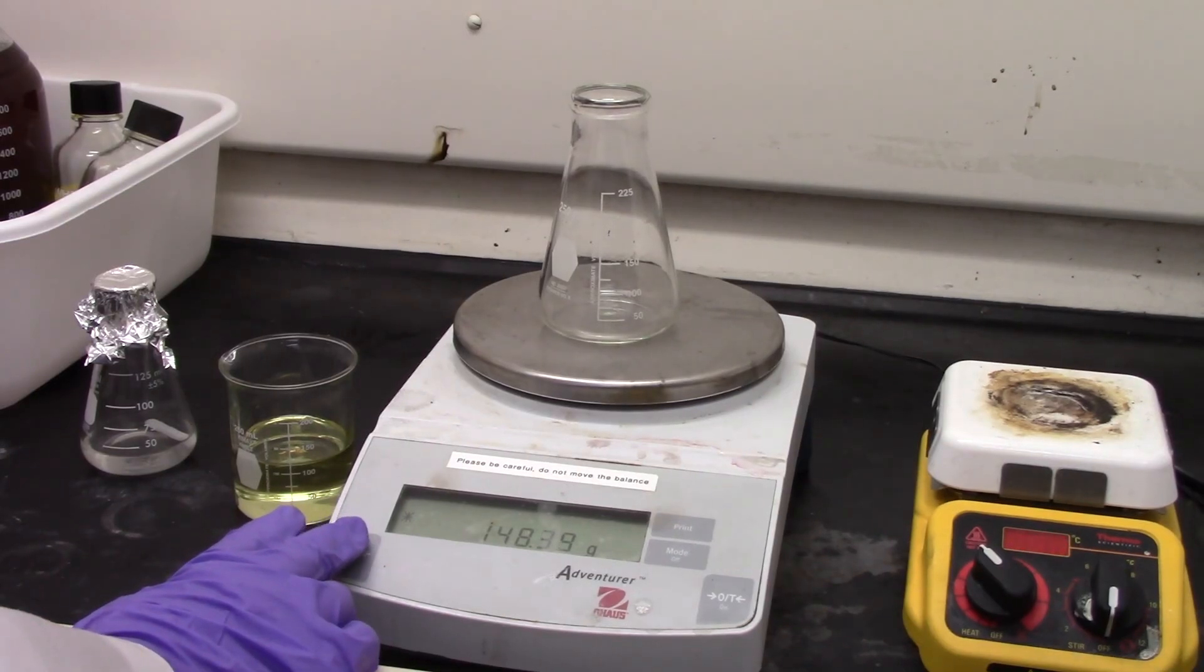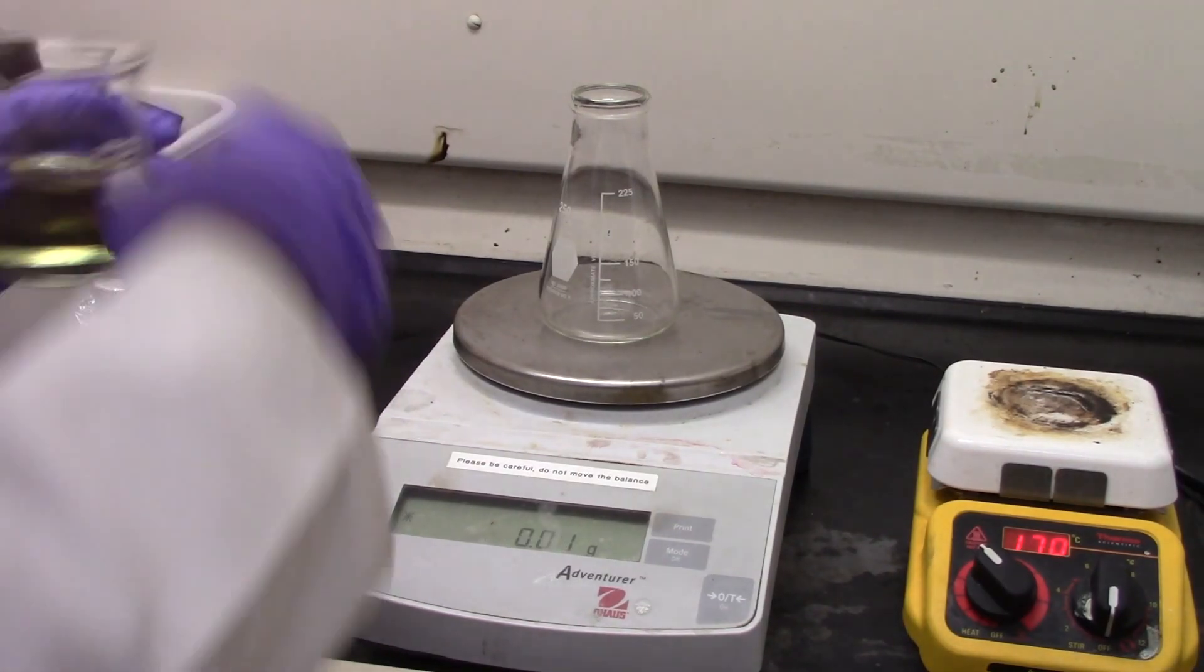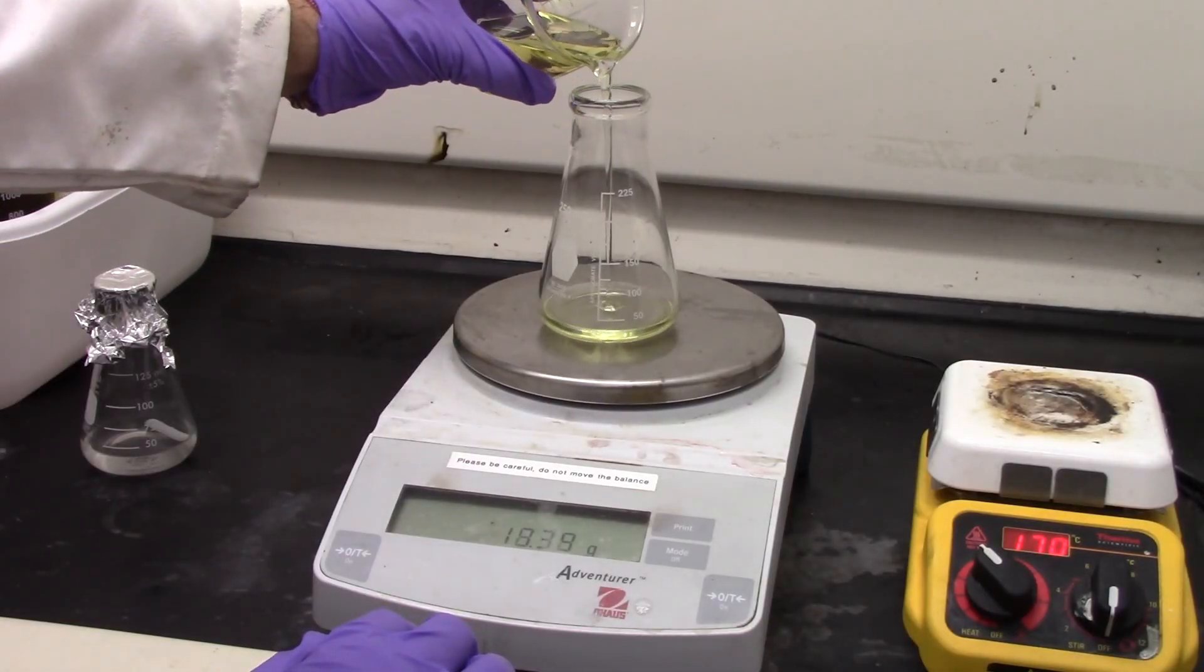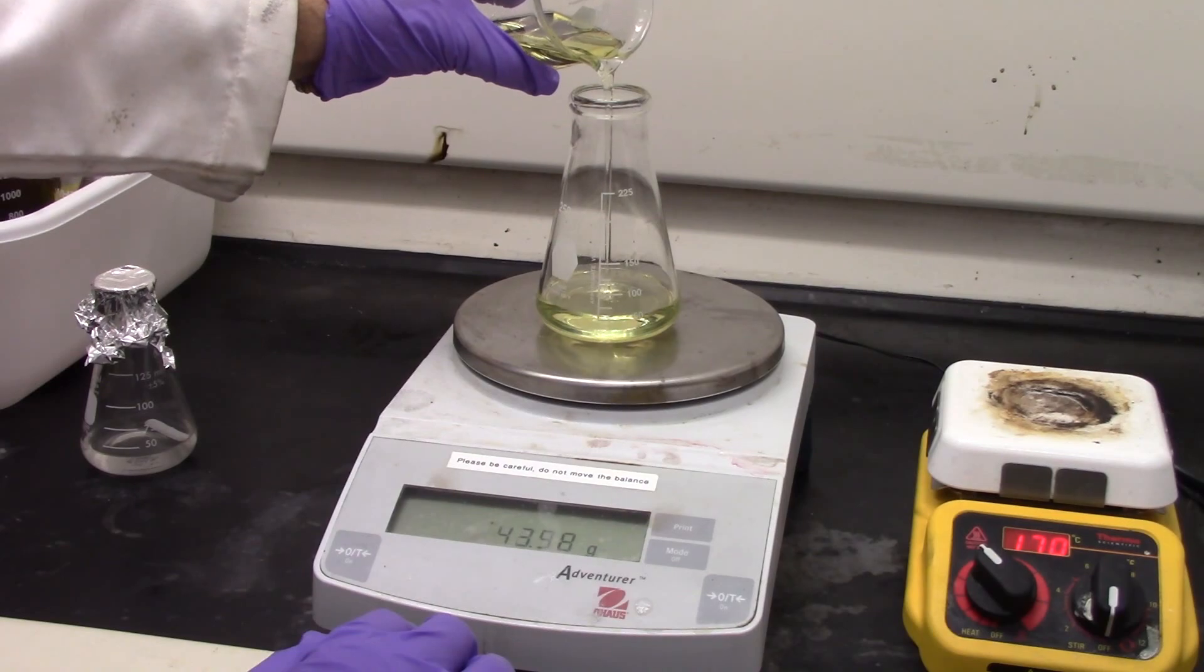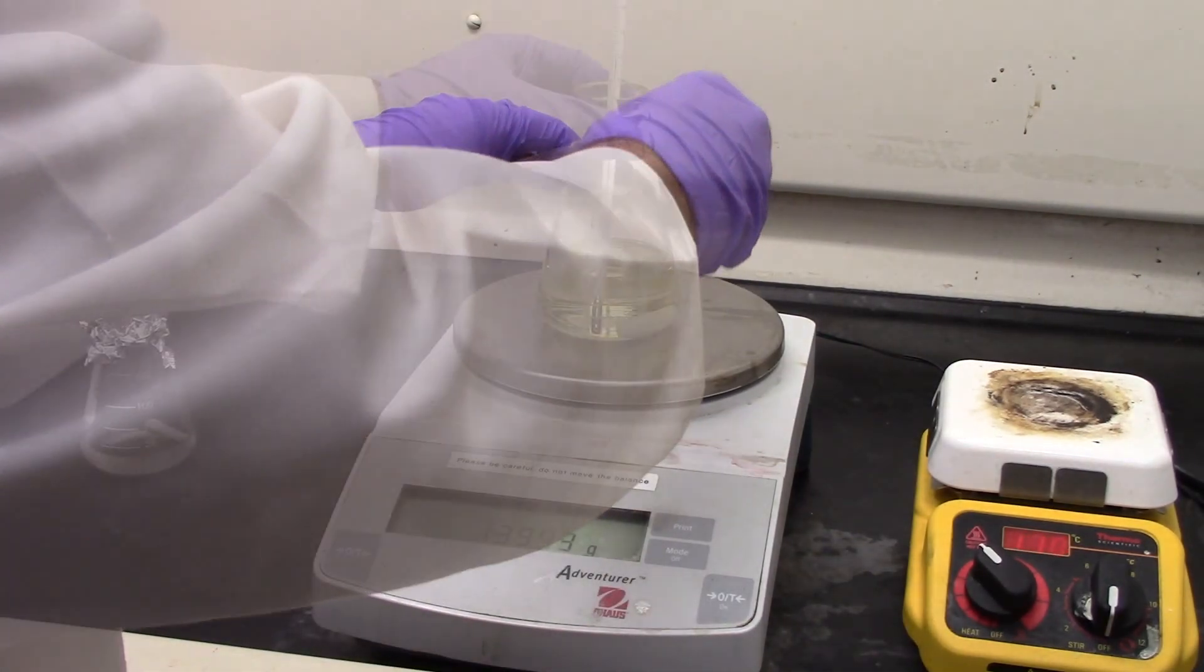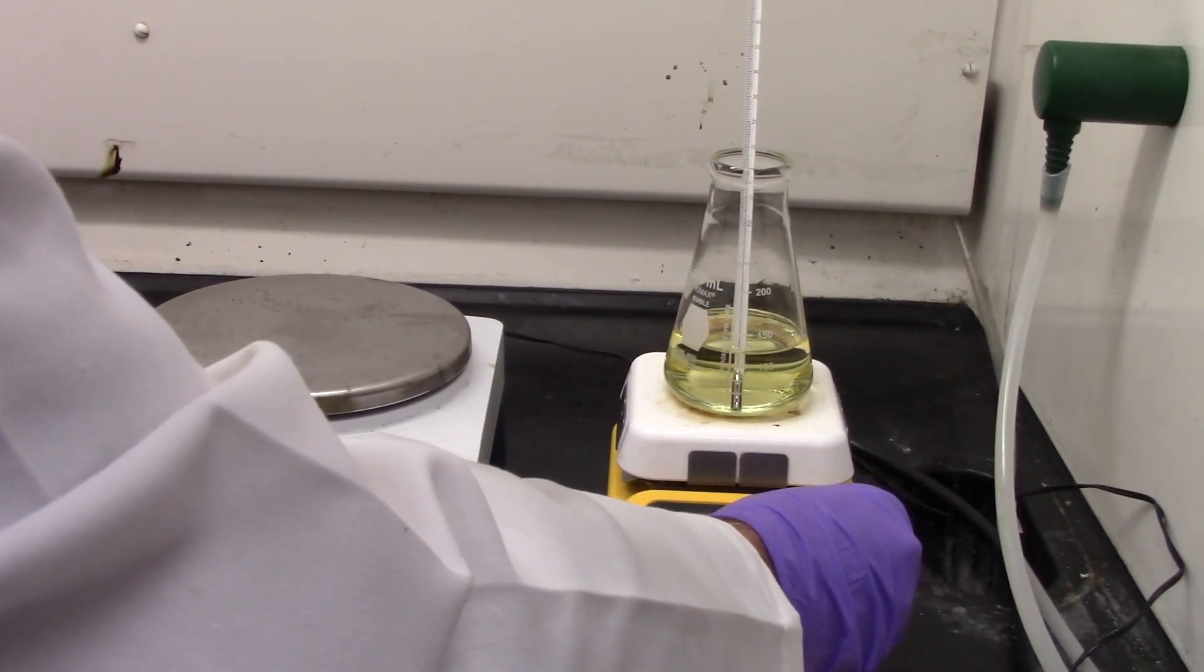Now weigh an empty 250 mL Erlenmeyer flask and record the weight in your data table. Into this same flask weigh out about 100 grams of vegetable oil to be converted to biodiesel, and record the exact weight in the data table. Add a stir bar, put on a hot plate, and start to heat the oil to around 60 degrees Celsius.